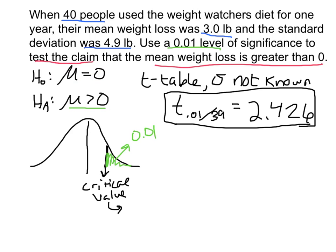The test statistic uses everything from the sample: 40 people, standard deviation of 4.9, and a mean of 3. The test statistic formula is: TS = (x̄ − μ) / (s / √n). Here, x-bar is the sample mean of 3.0, mu is the claimed population mean of 0, and the standard deviation is from our sample. I don't know the population standard deviation — that's why I'm using the T-score — and n is 40.